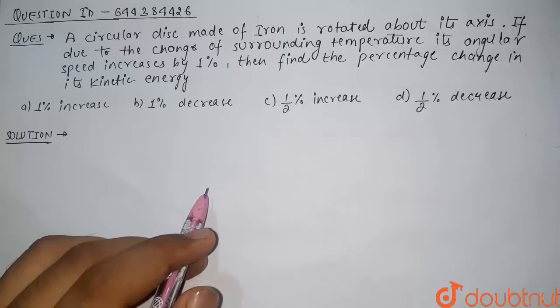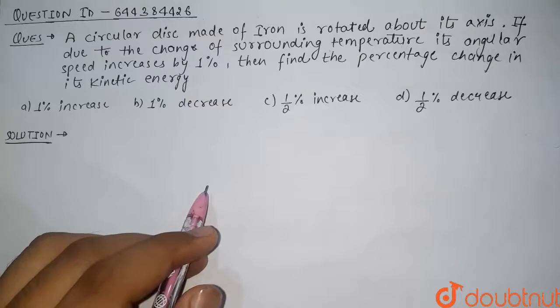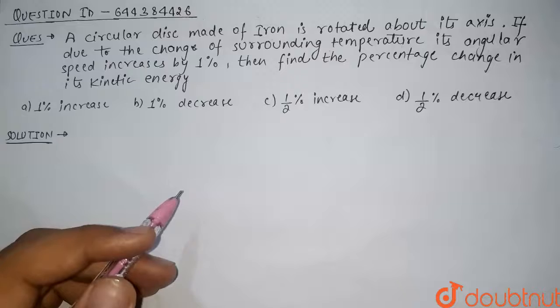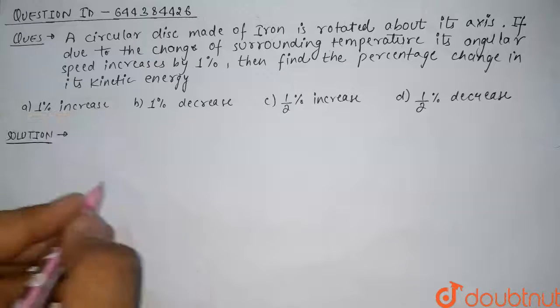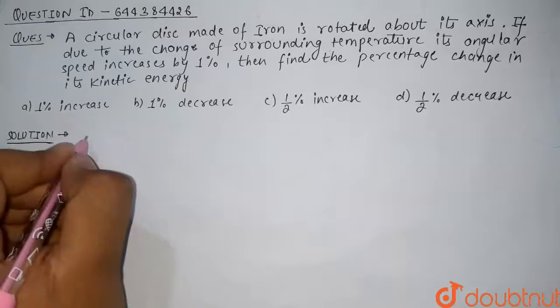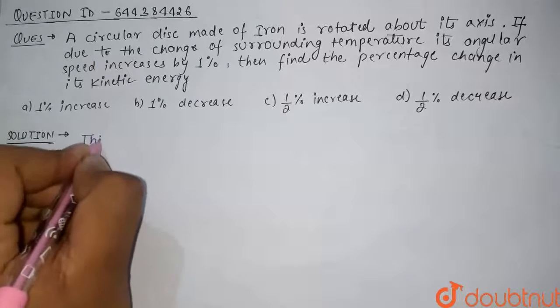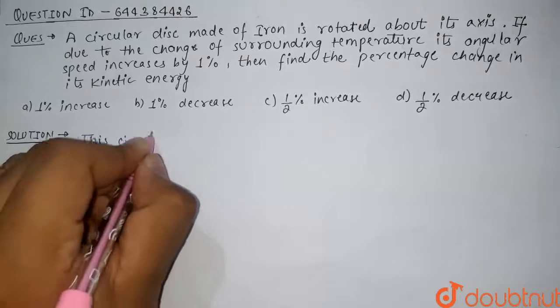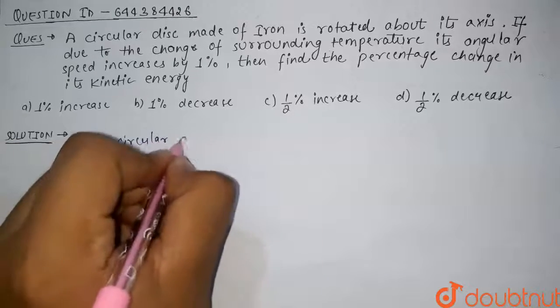In this question we have been given that due to change in temperature, its angular speed increases by 1%, and we have to find the percentage change in kinetic energy. Now since this circular disk is rotating...